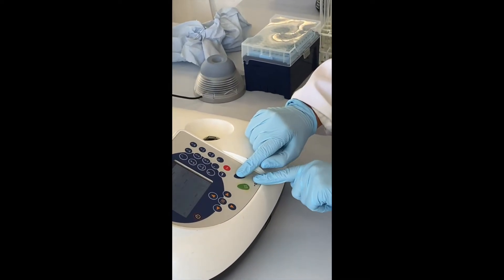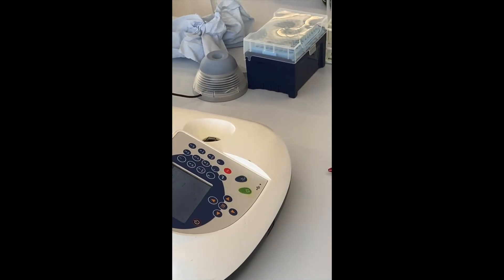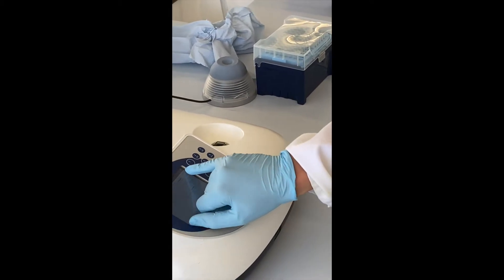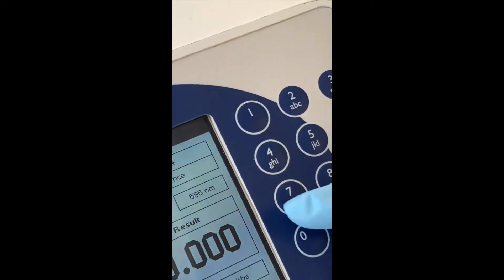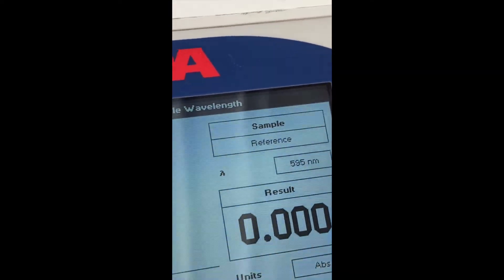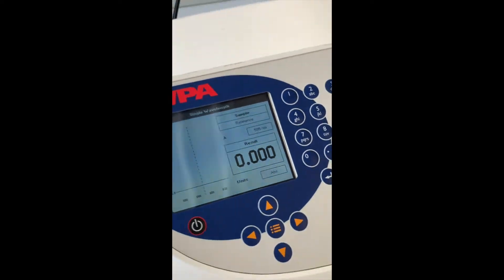You'll press the blue button then to blank the machine. A small light will appear on top, and it will give a reading of zero, saying that the spectrophotometer has been blanked.